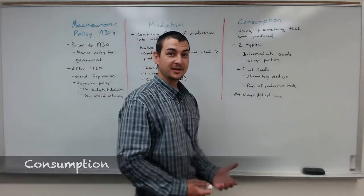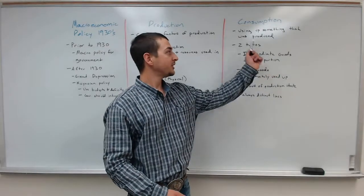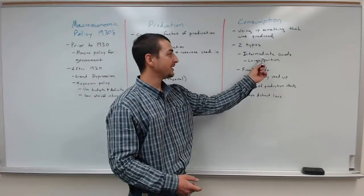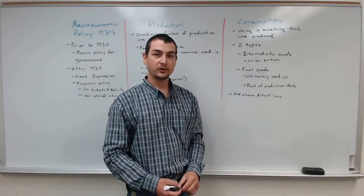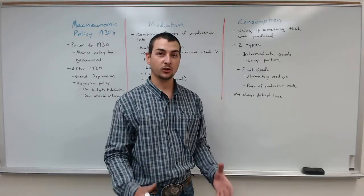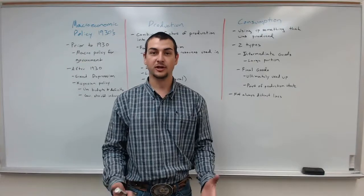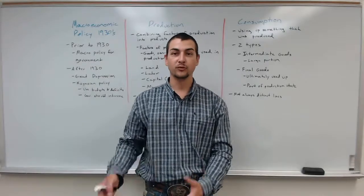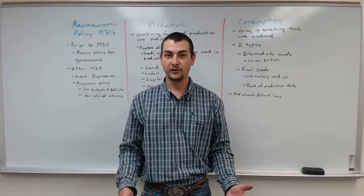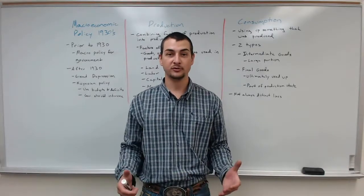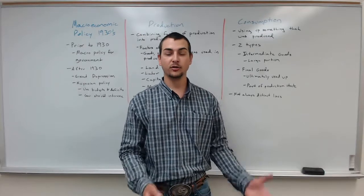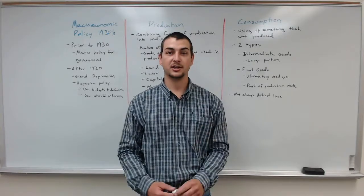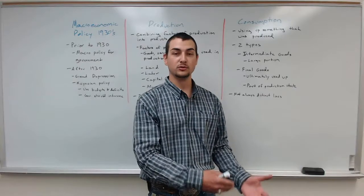The second continual process in economics is consumption — using up something that was produced. We have two main types of goods: intermediate goods and final goods. Final goods are goods that are ultimately, completely, and totally used up by an individual consumer. A car that a person drives to the grocery store is a final good — the consumer keeps it until it is completely used up. Another example is a t-shirt: you wear it until it has holes and then throw it away.